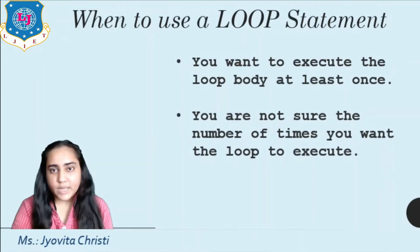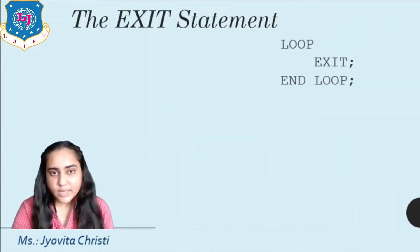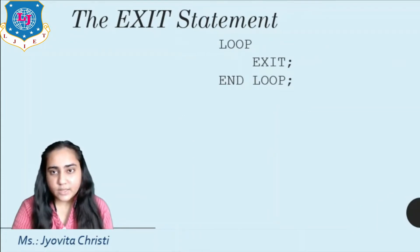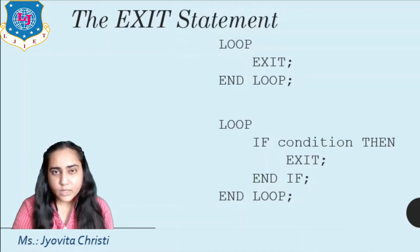The exit statement allows you to unconditionally exit the current iteration of a loop. Typically you use the exit statement with an if statement to terminate a loop when a condition is met. Let's understand this with a practical example.